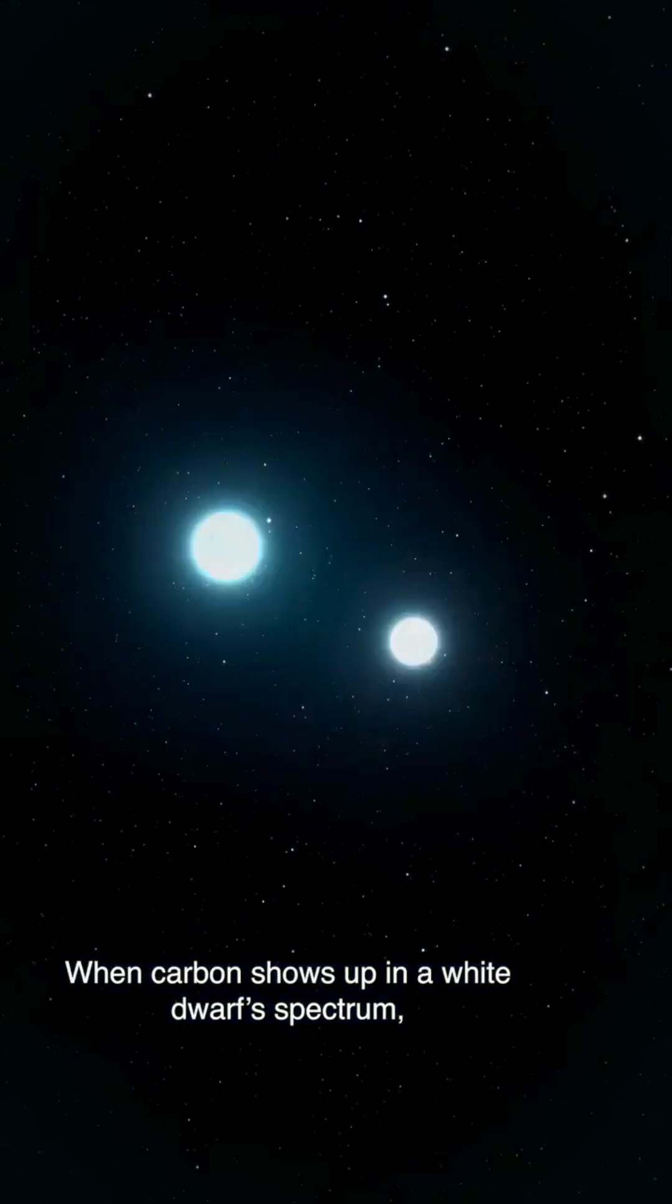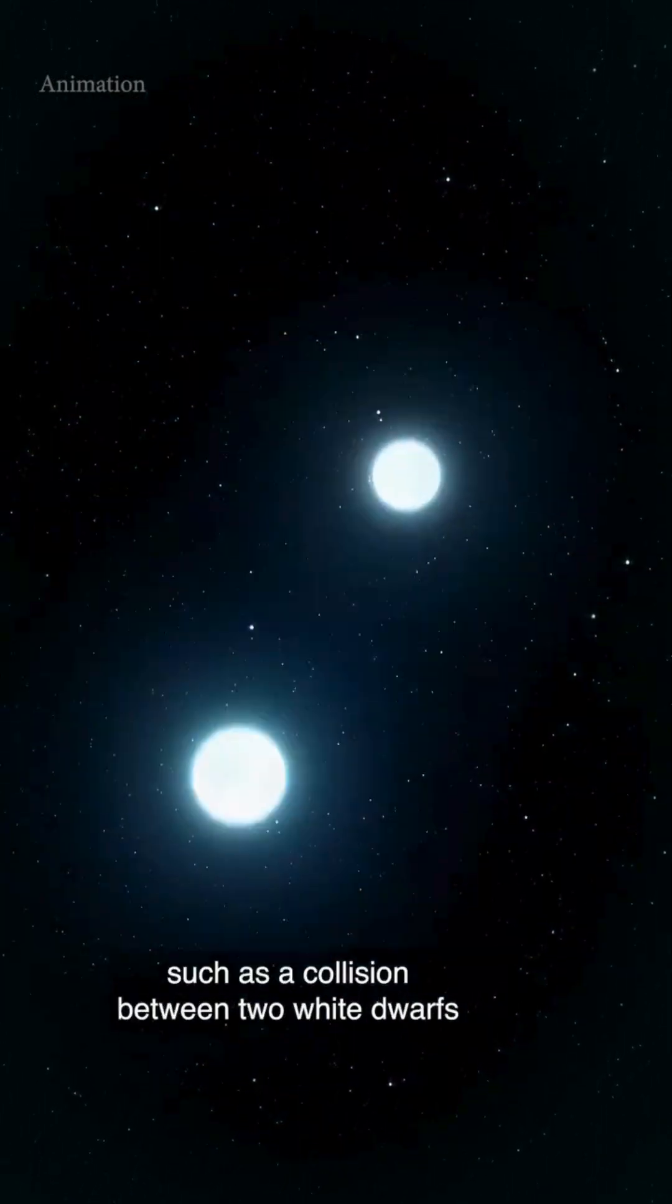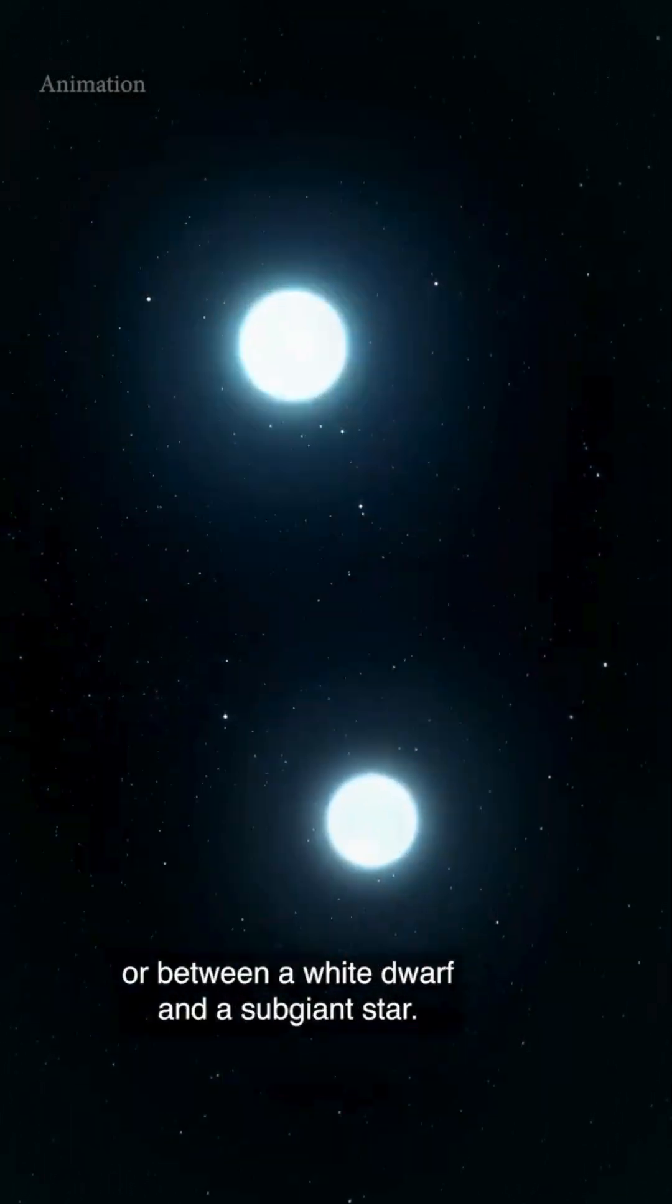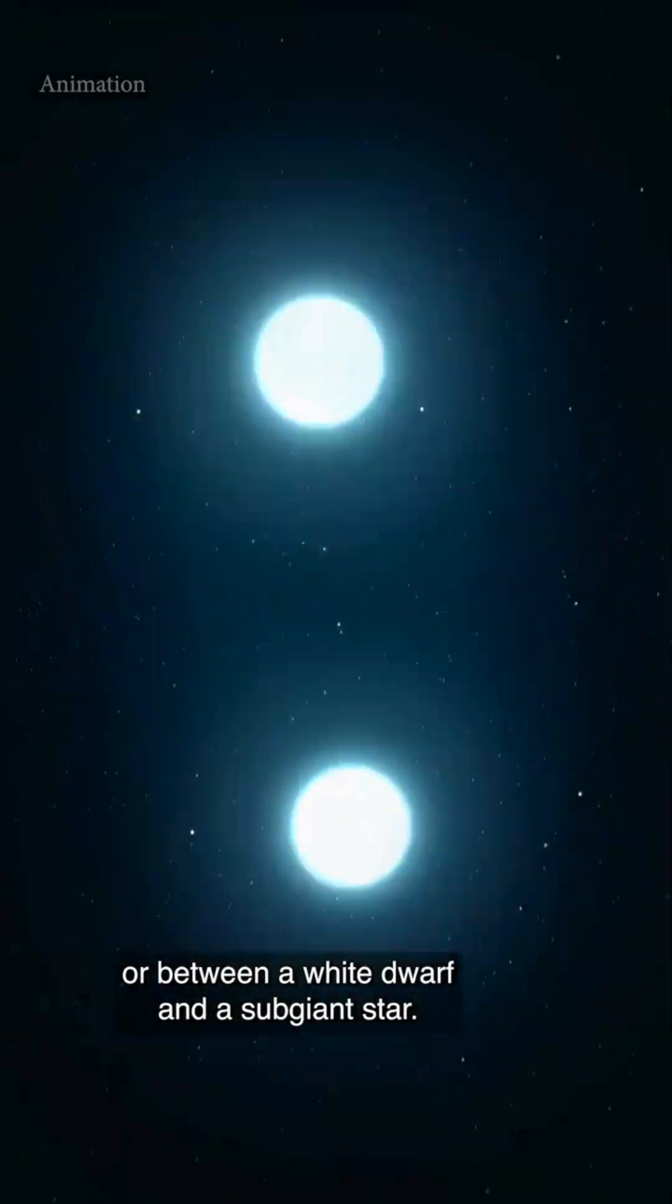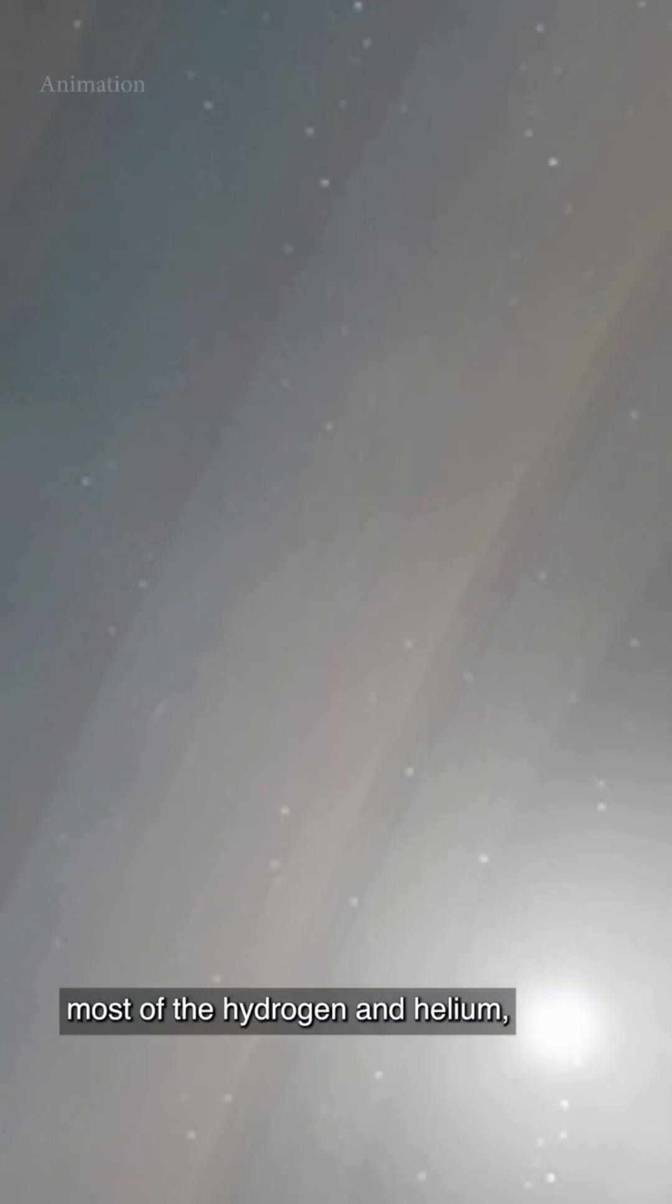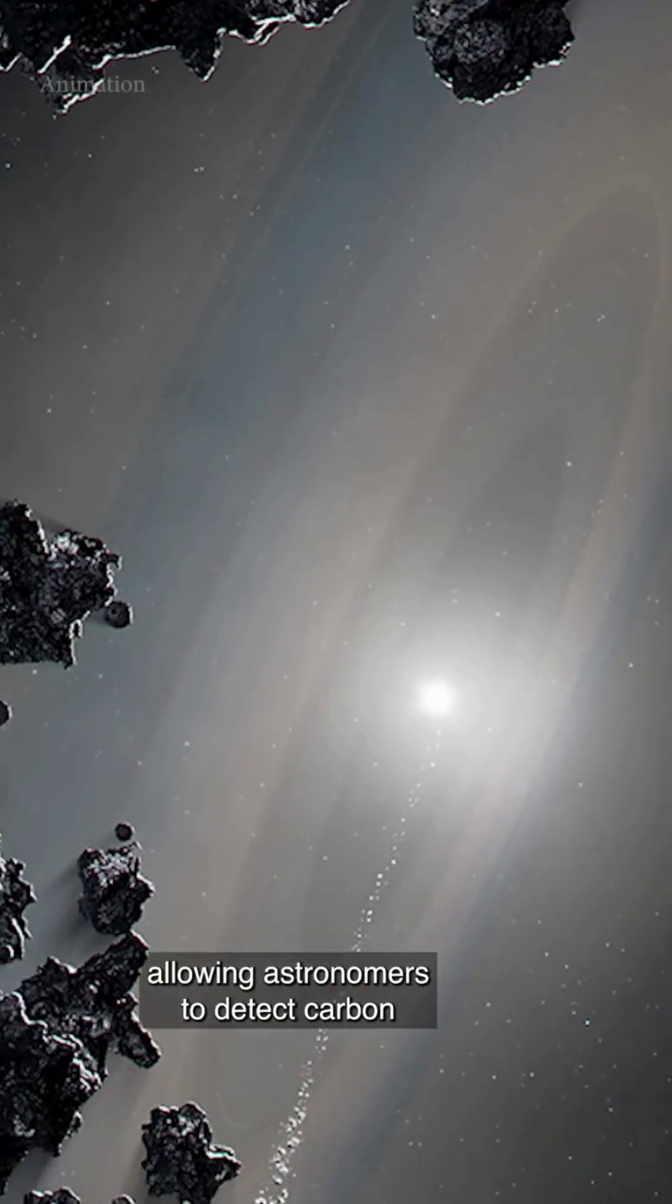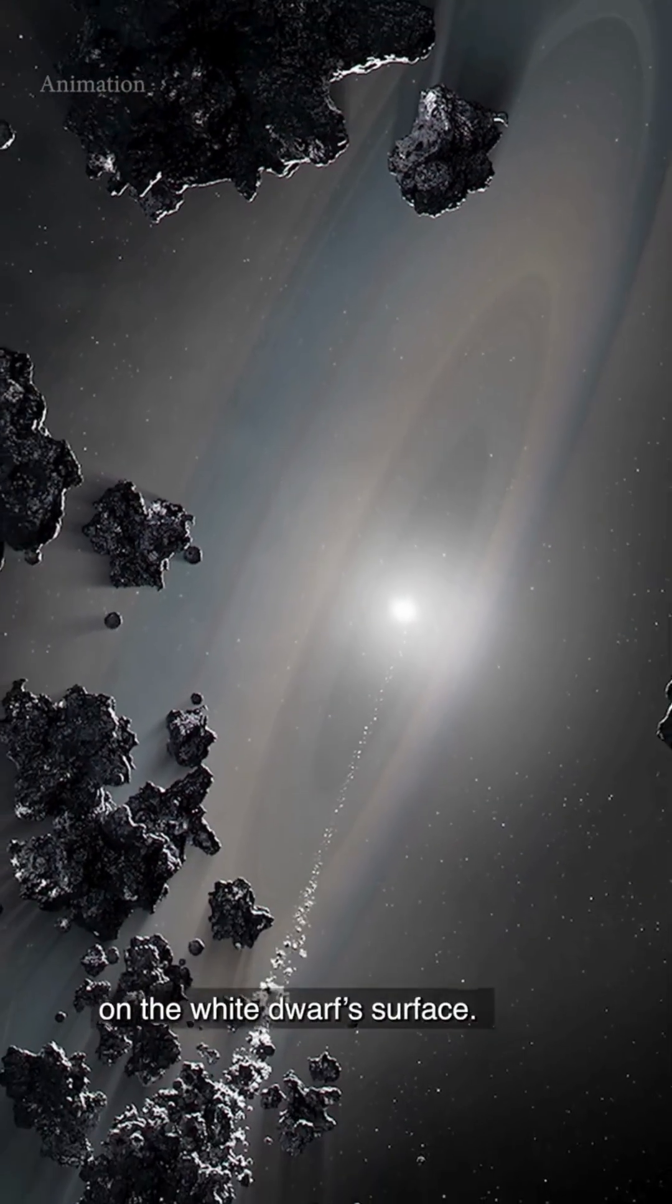When carbon shows up in a white dwarf spectrum, it can point to a more violent origin, such as a collision between two white dwarfs or between a white dwarf and a subgiant star. These collisions can burn off most of the hydrogen and helium, leaving only a thin layer behind.